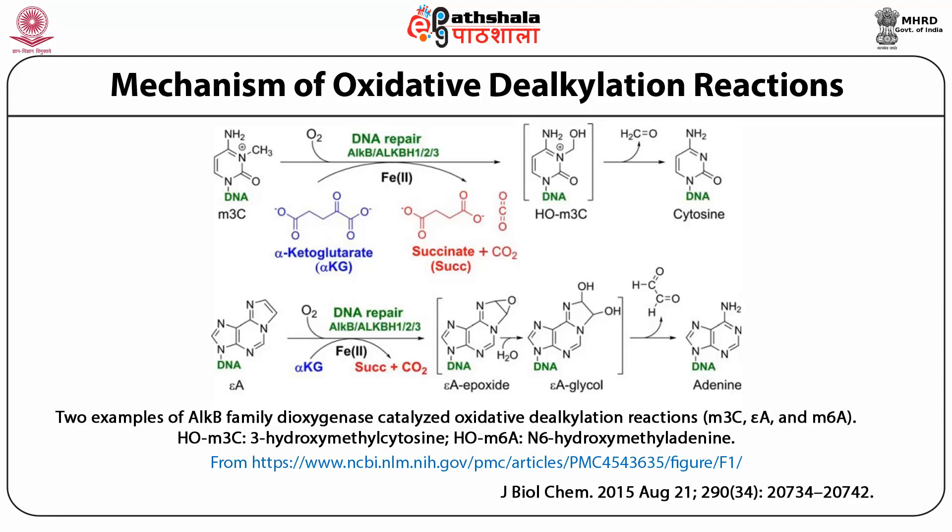This is the cartoon depicting how the oxidative dealkylation reaction works. In the presence of oxygen and iron, ALKB or ALKBH1/2/3 can remove methyl groups from methylated cytosine, resulting in cytosine formation. Similarly, they can also remove methyl groups from hydroxymethyl adenine as shown in the cartoon.